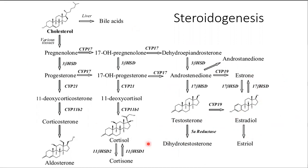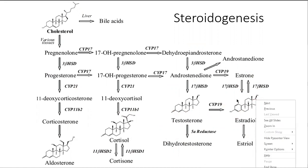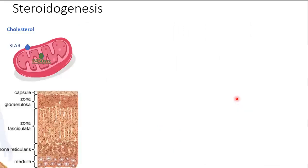So this is what you would usually see, and I am going to talk about how the adrenal gland completes this process. In the adrenal gland, we are talking about steroidogenesis within the adrenal cortex.